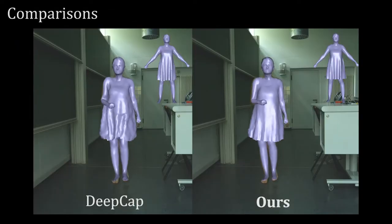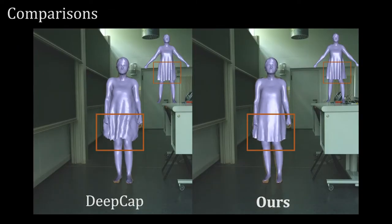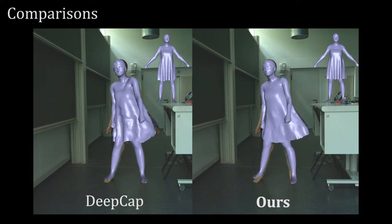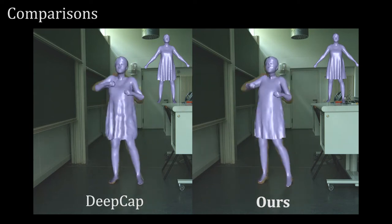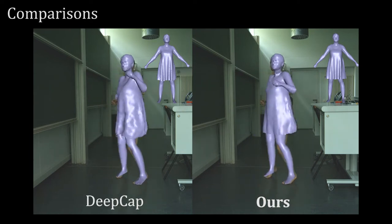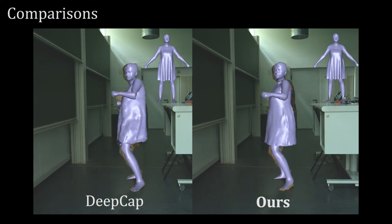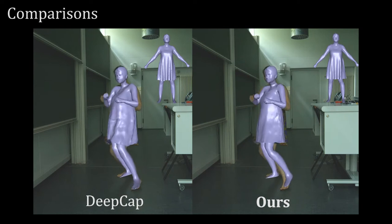We compare our approach to the state-of-the-art template-based monocular human performance capture method, DeepCap. We visualize the template for each method in the top right corner. Unlike our approach, DeepCap only uses geometric priors on the deformations during training. Consequently, the resulting cloth deformations contain static wrinkles from the initial template that persist across all poses.